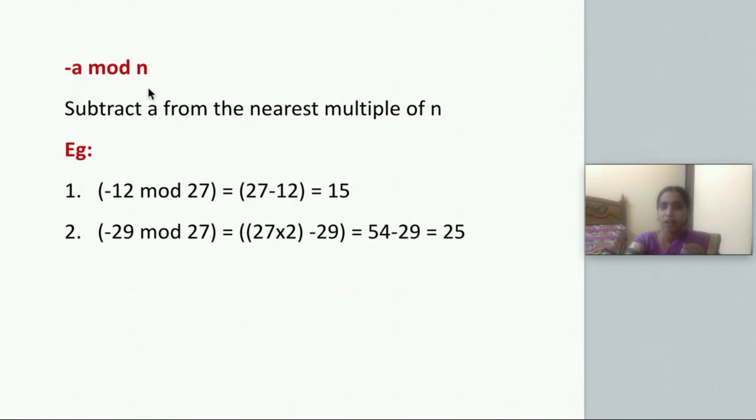For -a mod n, you have to subtract the a value from the nearest multiple of n. That is the rule. We shall see an example: -12 mod 27. The nearest multiple of 27 for 12 is 27 itself, so we shall subtract 12 from 27. So 27 minus 12 is 15.